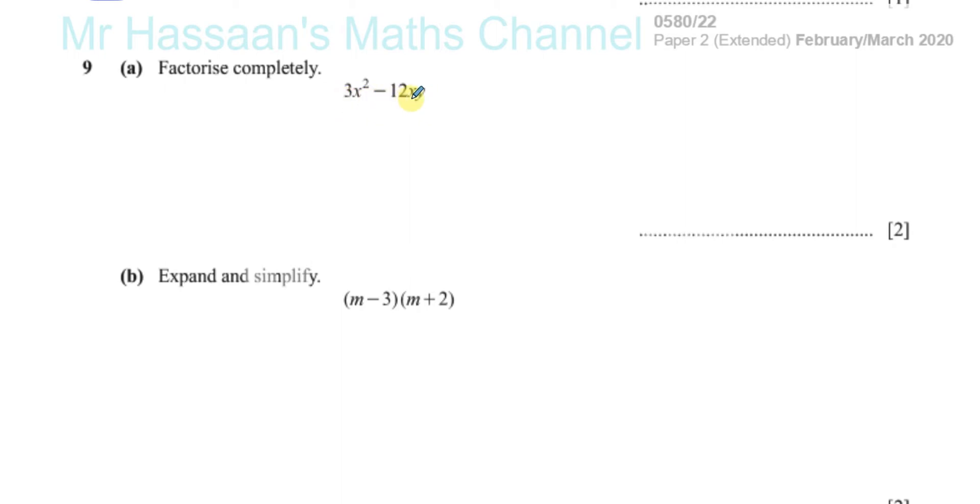So here we have two terms, and when we're factorizing, we're trying to take out or find out what the common factor is. You see there's a number three and there's twelve. Three is a factor of both three and twelve, so you're going to write that number out. Then you can see what's common in both terms is an x, so three x is a common factor.